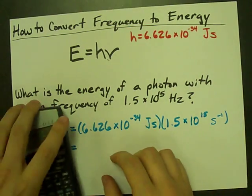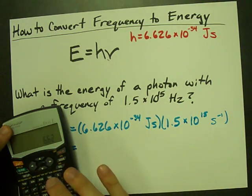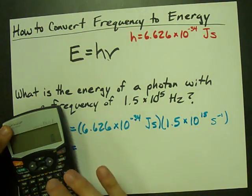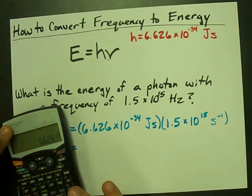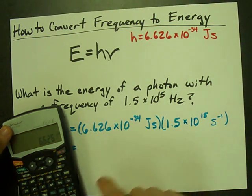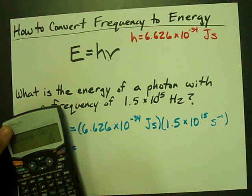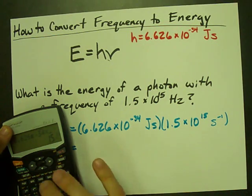Then all you have to do is plug that into your calculator: 6.626 times 10 to the power of negative 34 times 1.5 times 10 to the power of 15.